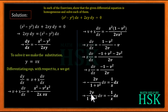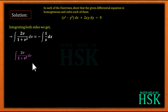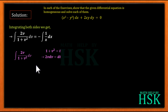We write 2v upon (1 plus v²) dv equal to minus 1/x dx, then integrate both sides. For the left side, we use the substitution 1 plus v² equals t, so 2v dv equals dt. The integral becomes 1/t dt, which equals log t, and since t equals 1 plus v², this becomes log(1 plus v²).